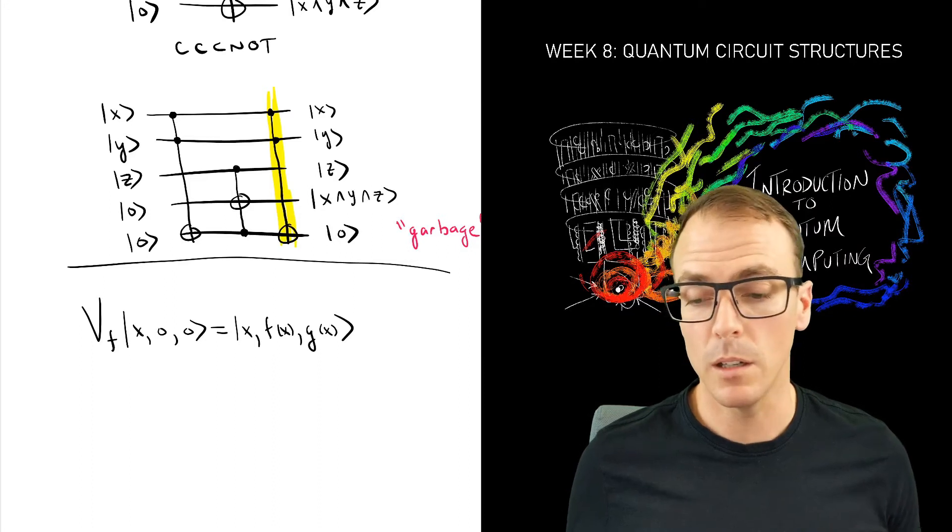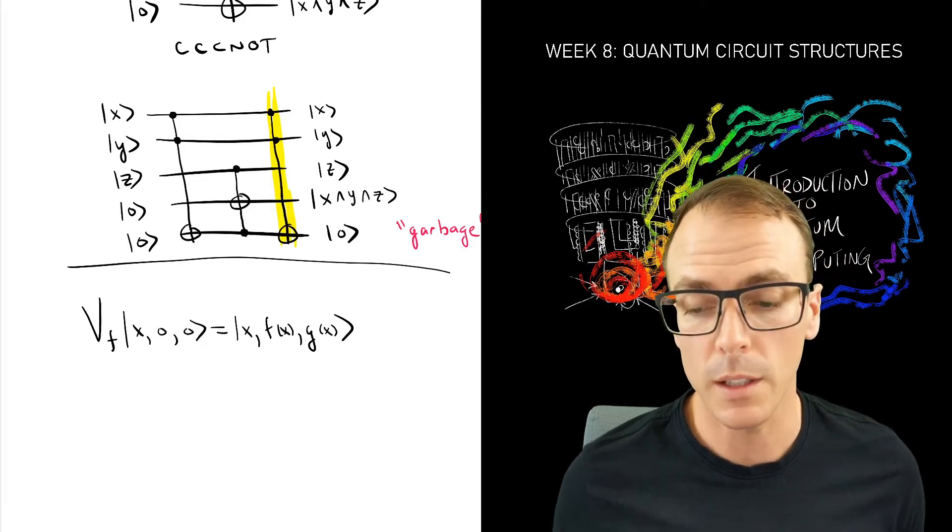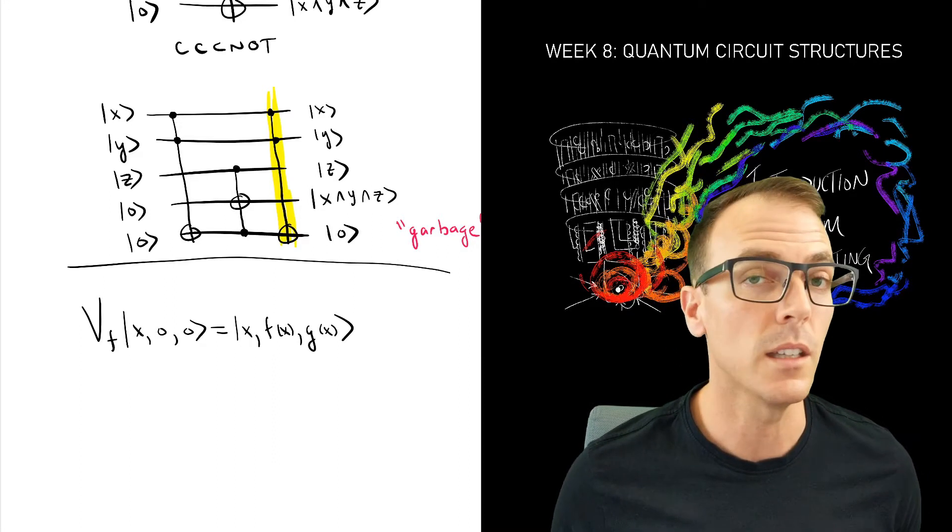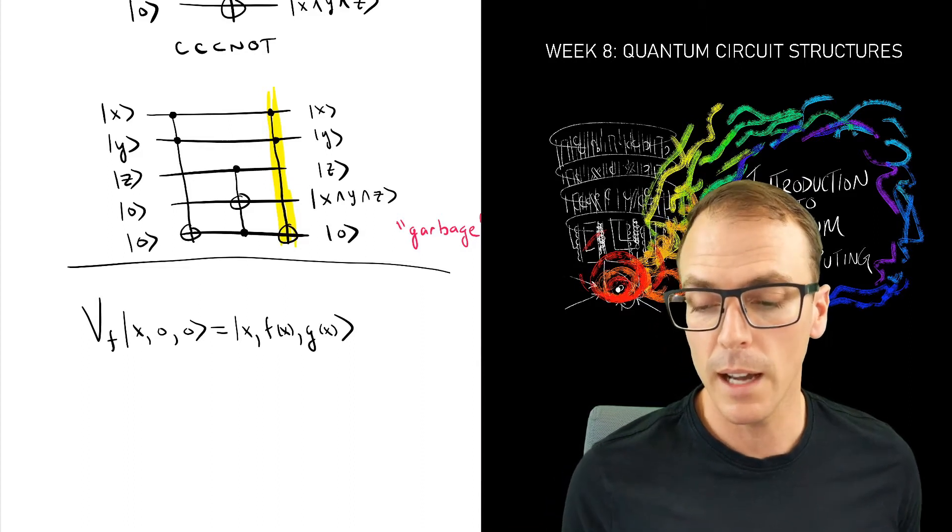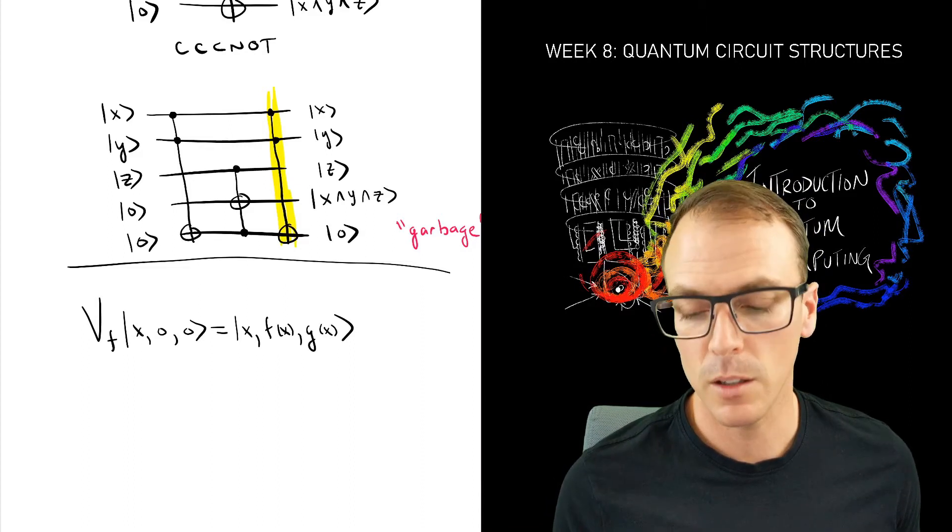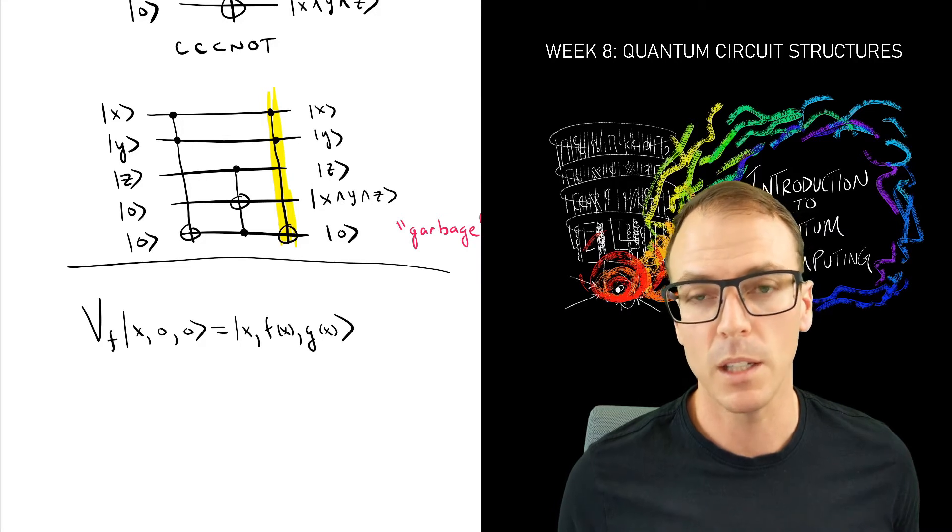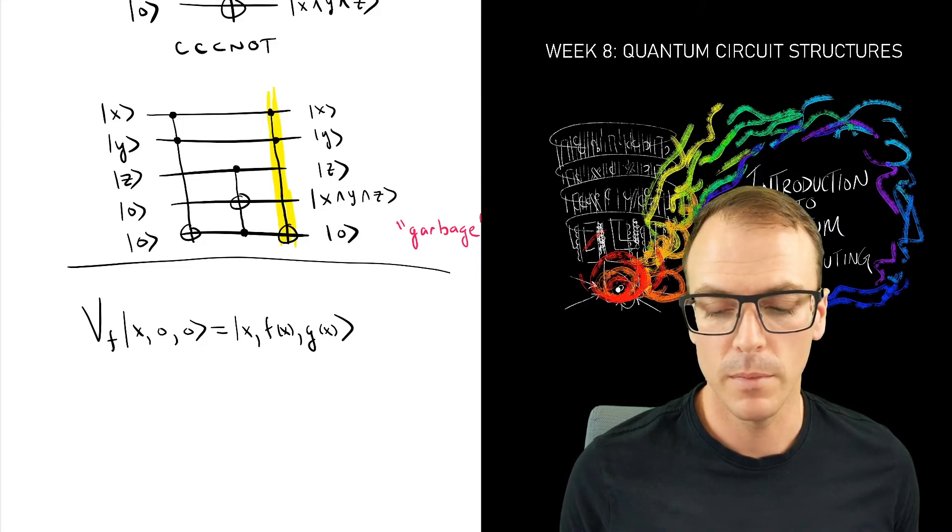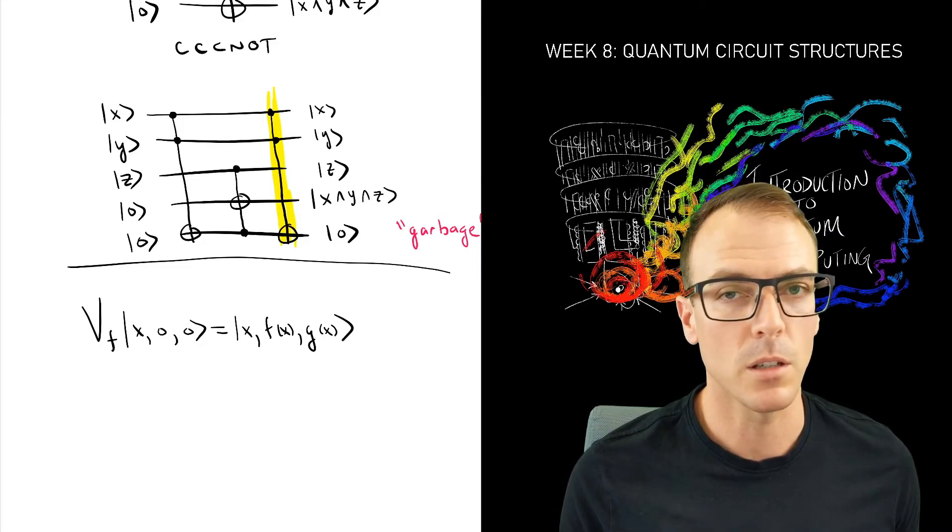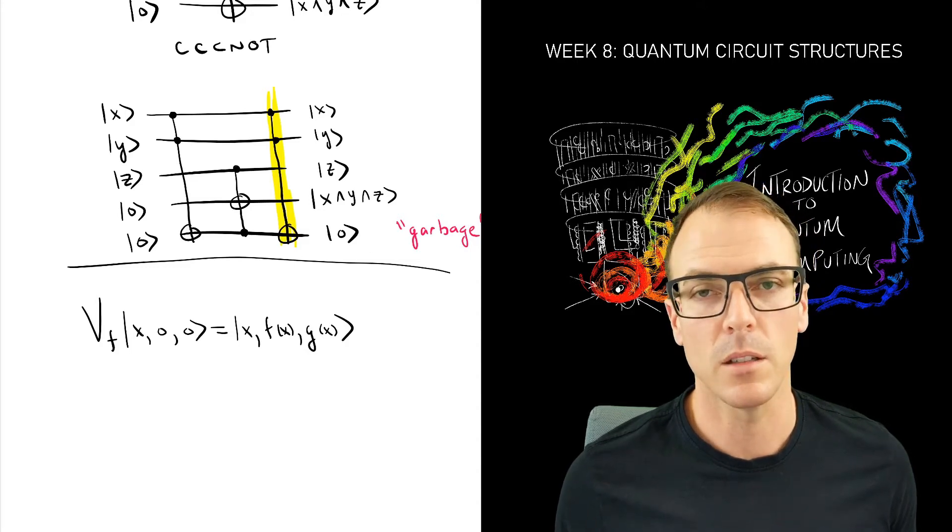So that's exactly what we did above with the two Toffoli gates implementing the CCCNOT gate. However, we don't have the exact way in which it performed this. So it didn't first put something into the garbage register and then put something into the output register.